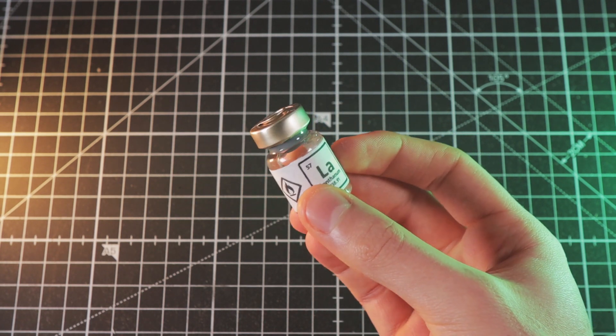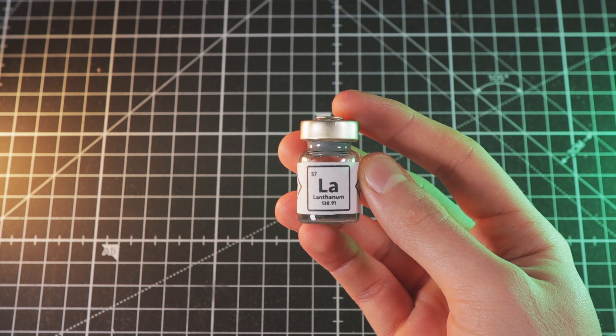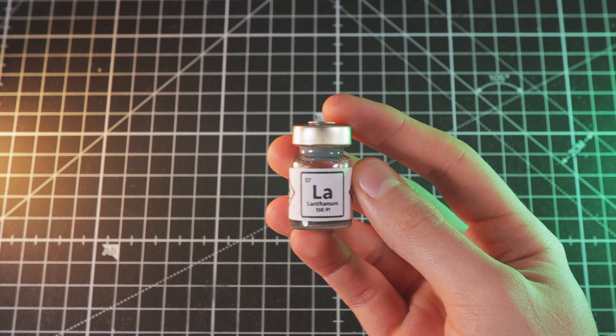Lanthanum-138 has a very long half-life, and its activity cannot be easily detected with a conventional Geiger counter. In order to do that, a large scintillator must be used, since it is much more sensitive.